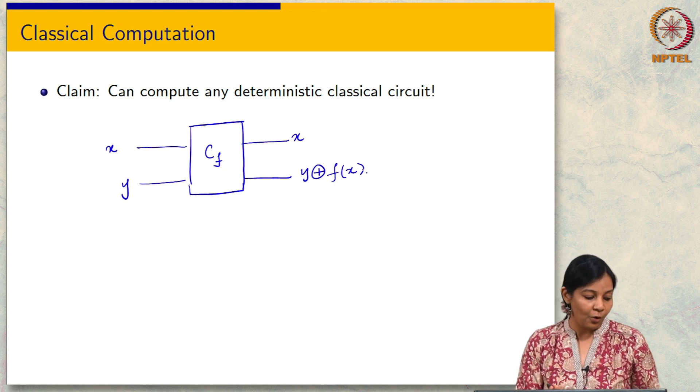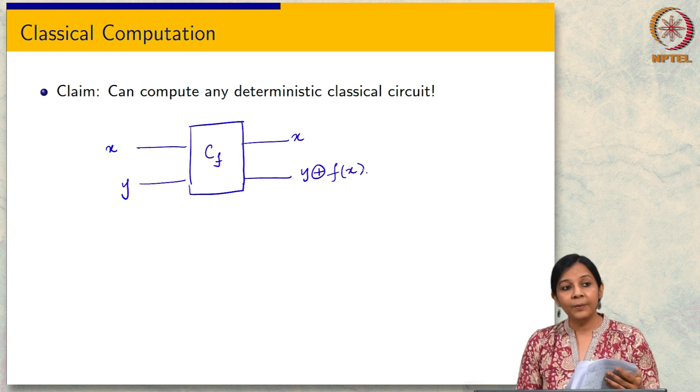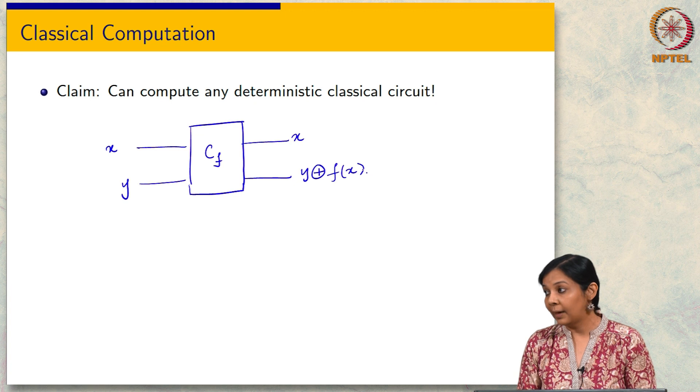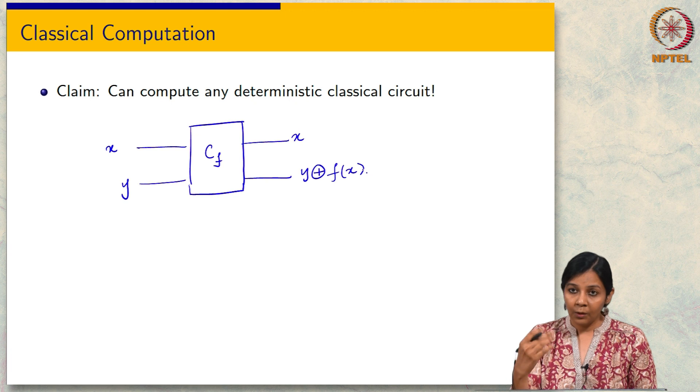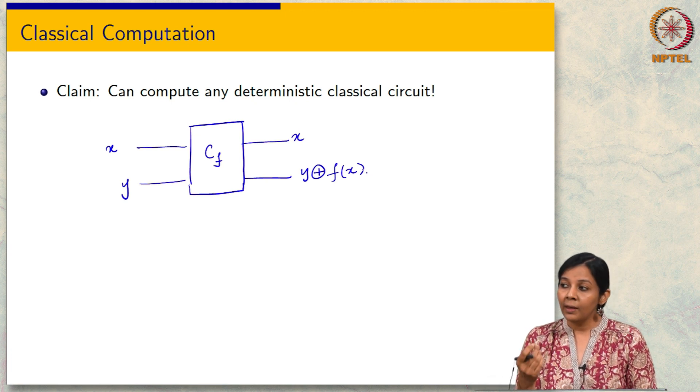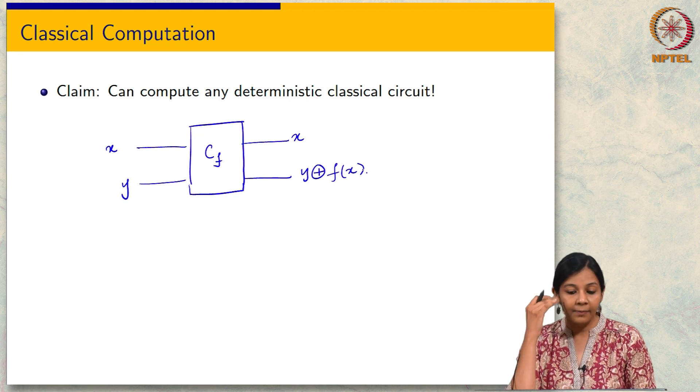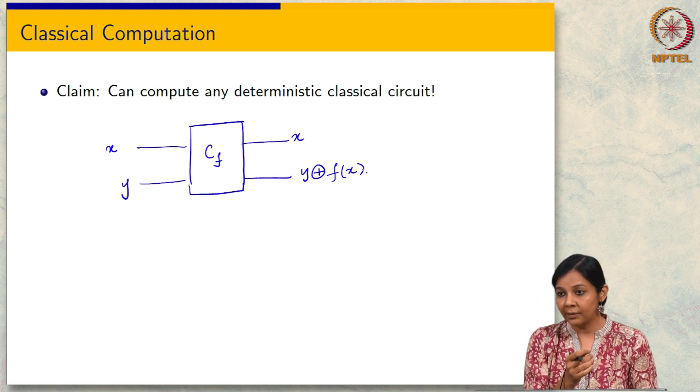We have set up all the machinery that we need. It was a little bit tedious maybe, but it is important to set up the language correctly. We also spent some time thinking about why the ancillary bits do not matter and now we are finally ready to say this. Now we can compute all classical functions. At the very least we proved that quantum computing is not going to be any weaker than classical computing.